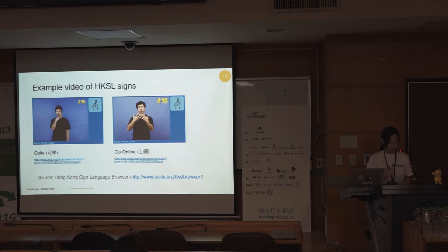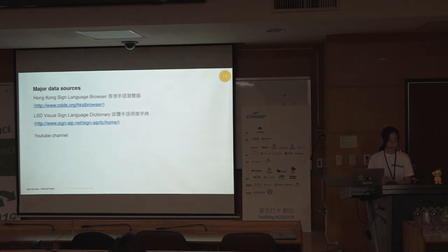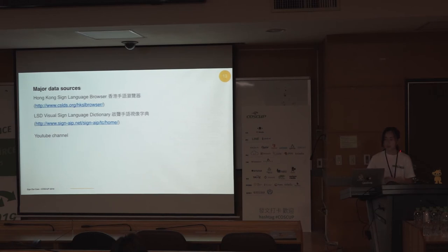Another example: 'Coke' involves a circling motion into the mouth. Sometimes you can't guess the meaning just from appearance — it's symbolic, just like Chinese characters where you can't always tell meaning from form. As for HKSL resources, the most useful ones I found are the Hong Kong Sign Language Browser and a sign language dictionary containing labeled videos. Some YouTube channels exist but are not enough. I'm still gathering data.